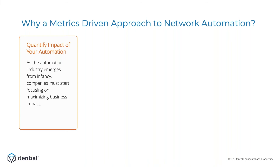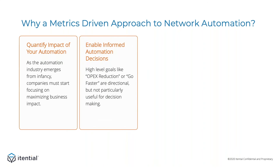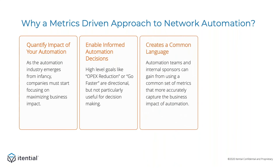Goal number one is to identify metrics that clearly quantify business impact. Goal two is to identify metrics that enable informed decisions for automation. High-level goals like OPEX reduction are directional, but they're not particularly useful for decision-making. For example, there are lots of ways to reduce OPEX that have nothing to do with automation. So it's important to look for metrics that are appropriate and can provide insights that differentiate between multiple potential approaches. Goal three is to create a common language that can be used by both the technology teams and by the business leadership.